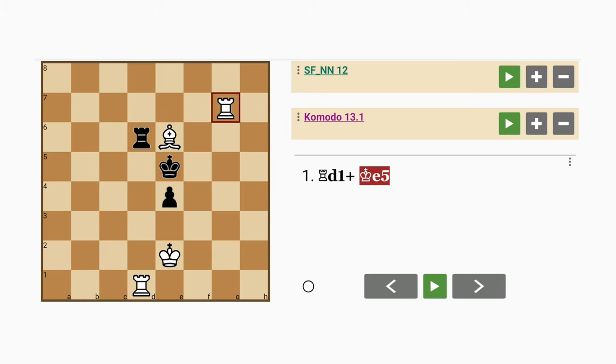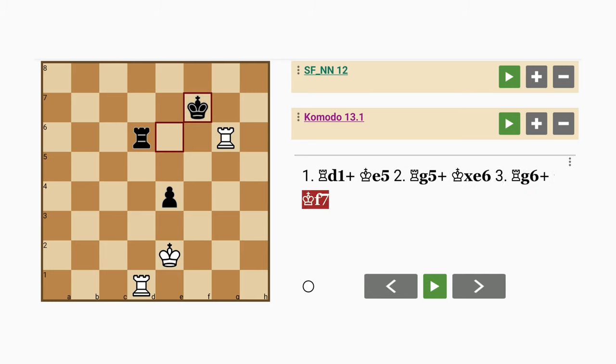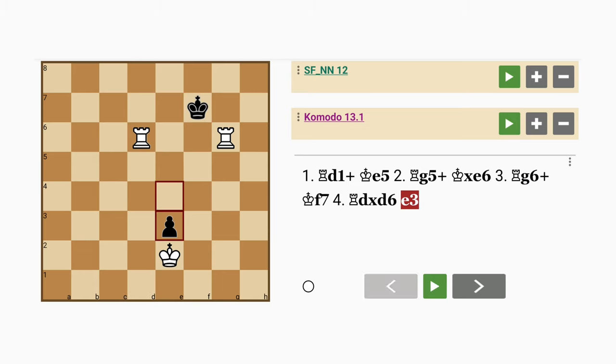After king to e5, maybe rook to g5 check. If king captures bishop, rook to g6 check, king to f7, rook on the d file captures rook e3, and this game will soon come to an end.